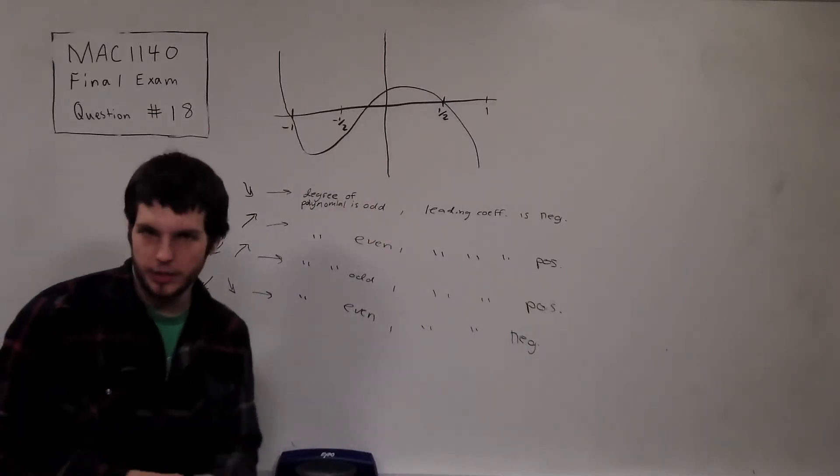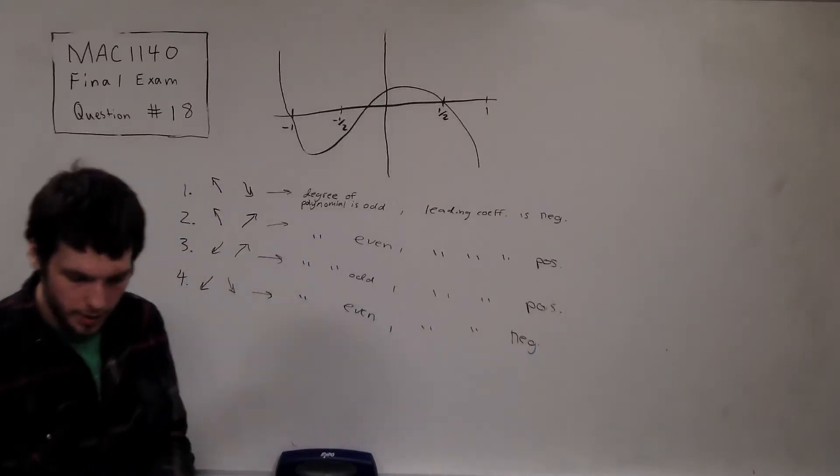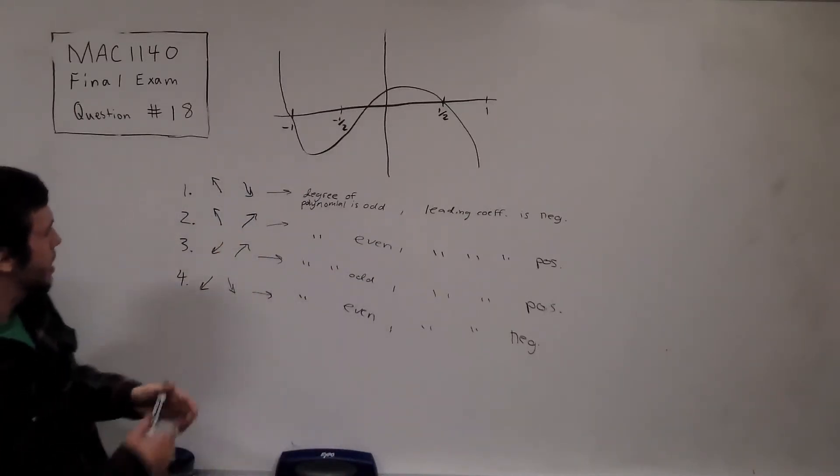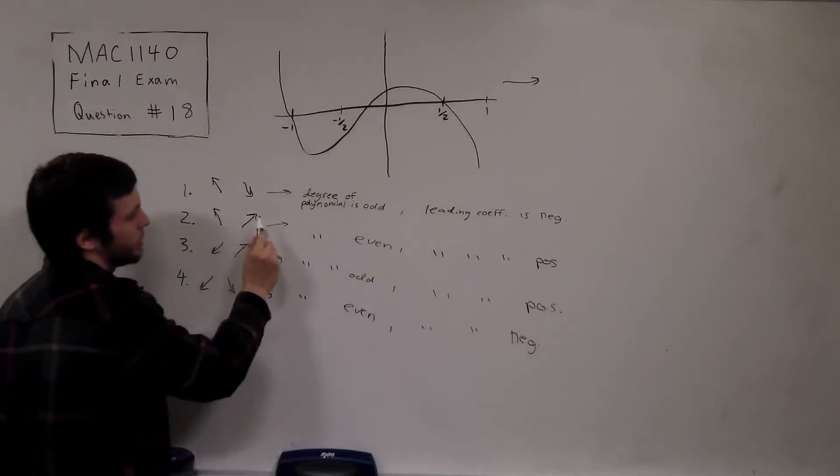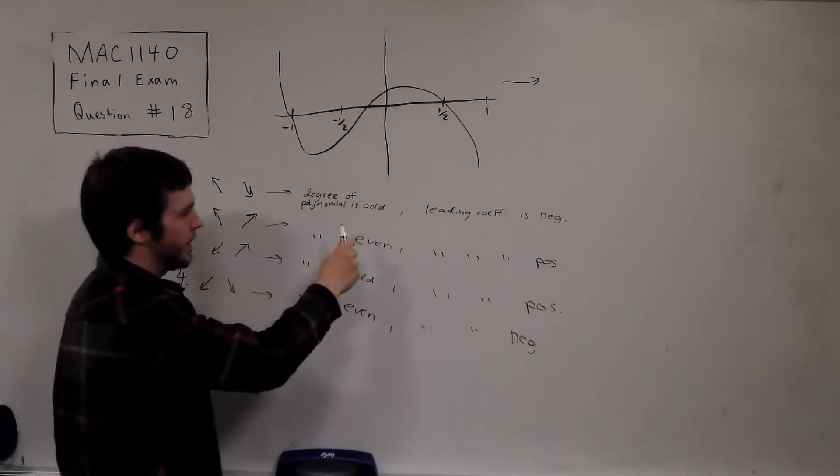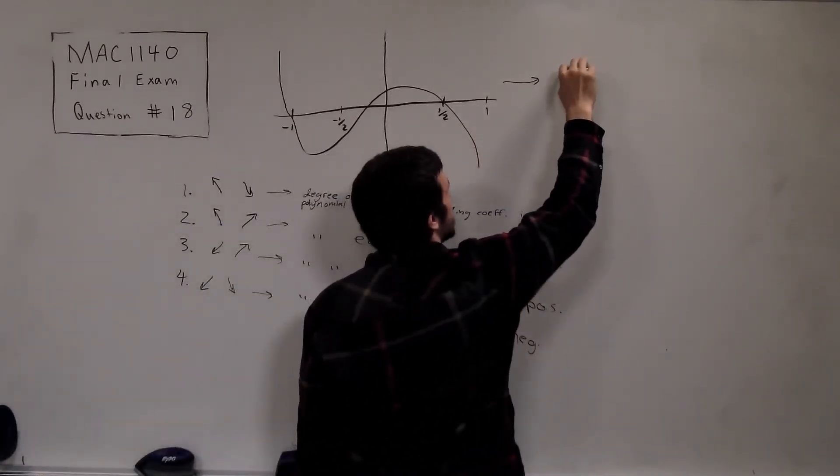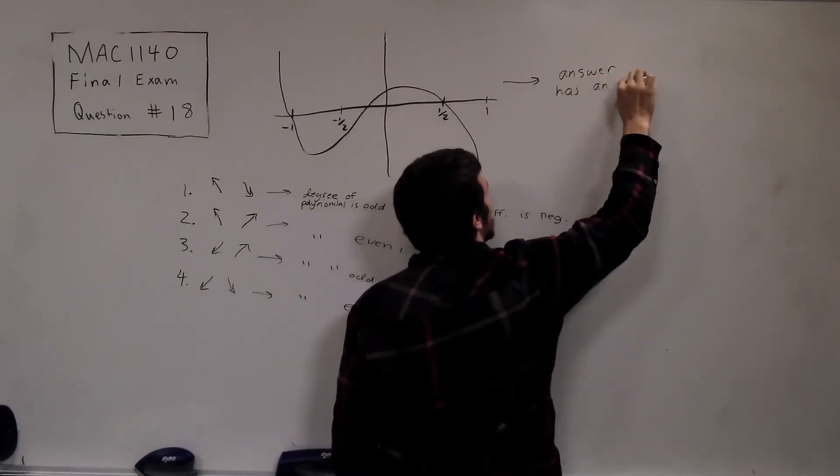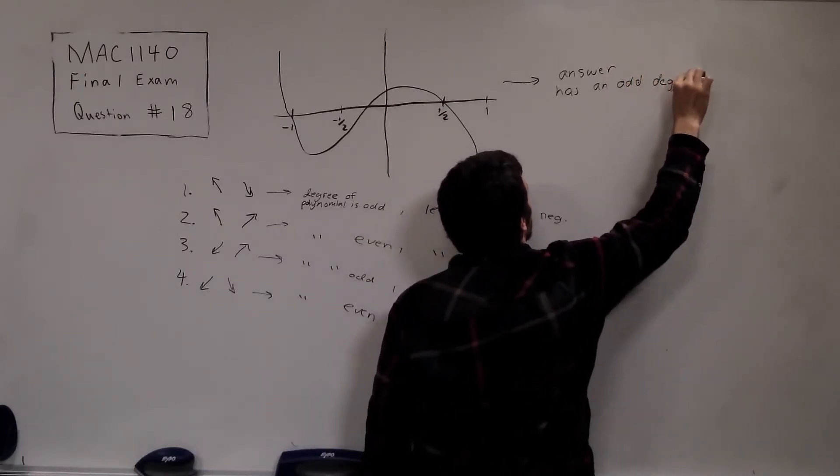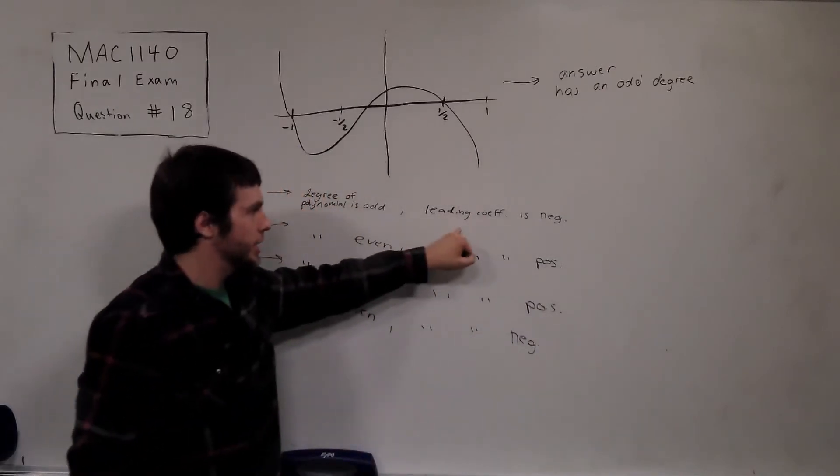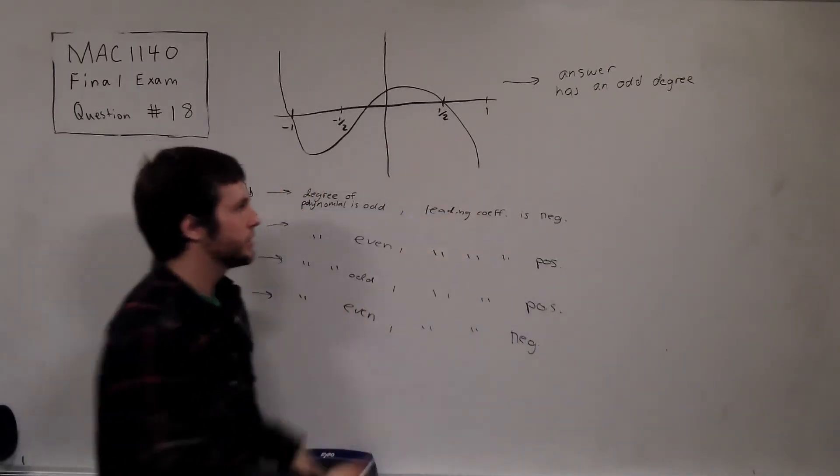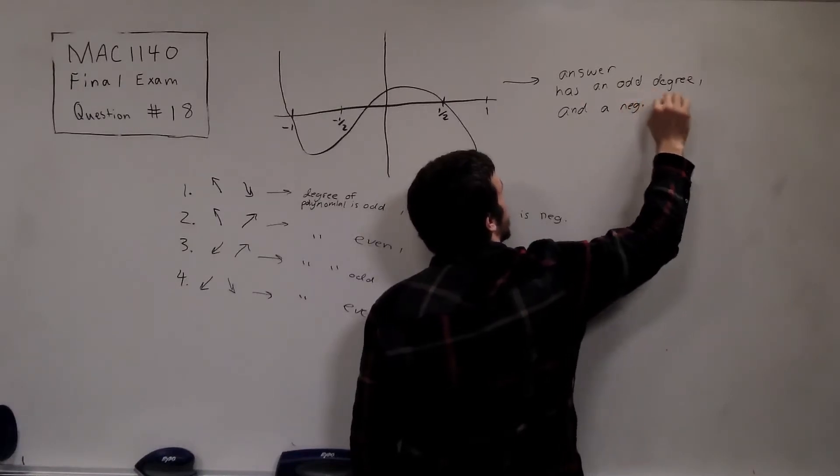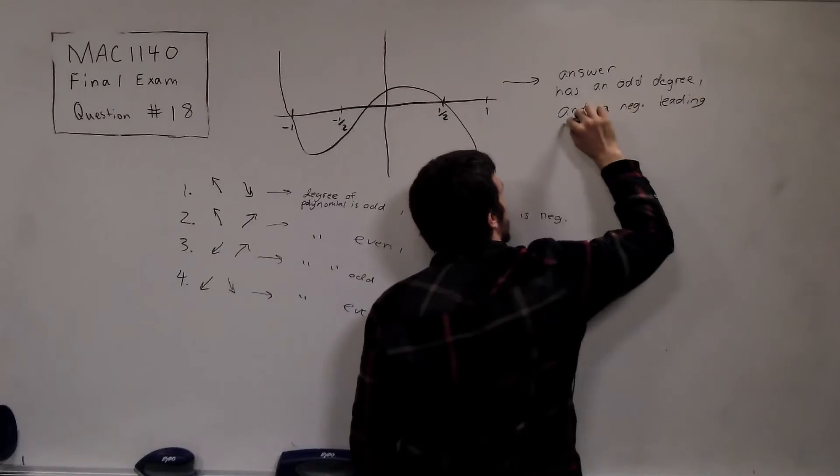So this is enough to answer our question, because now we'll take a look at our answer choices. Now this is information about, so I'll use this to say that, we are case one, so that our polynomial will have an odd degree. And what else do we know? We know the sign of the leading coefficient. Because the right-hand side points down, we know the leading coefficient is negative. So, the answer has an odd degree and a negative leading coefficient.